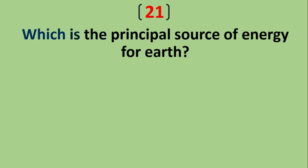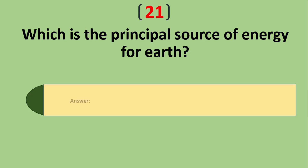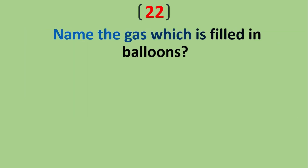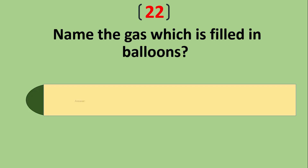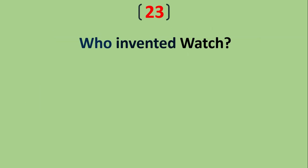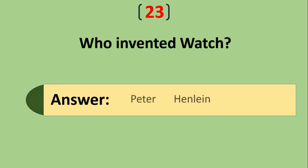Which is the principal source of energy for earth? Sun. Name the gas which is filled in balloons. Helium. Who invented the watch? Peter Henlein.